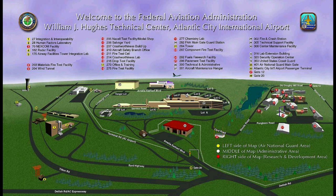Field Offices: Flight Standards Service. Within the FAA, the flight standards service promotes safe air transportation by setting the standards for certification and oversight of airmen, air operators, air agencies, and designees. It also promotes safety of flight of civil aircraft and air commerce by: (1) accomplishing certification, inspection, surveillance, investigation, and enforcement; (2) setting regulations and standards; and (3) managing the system for registration of civil aircraft and all airmen records. The focus of interaction between flight standards service and the aviation community is the flight standards district office (FSDO).